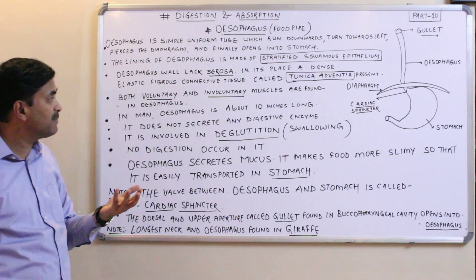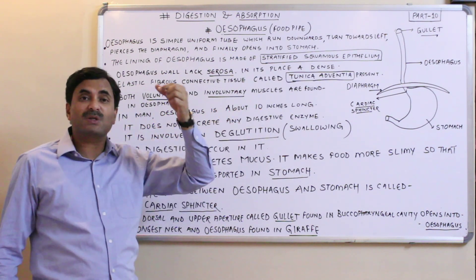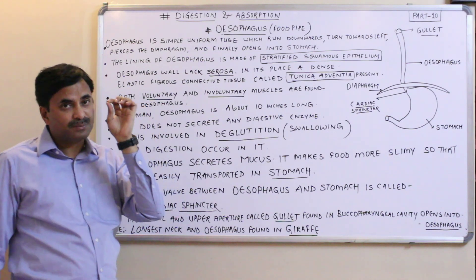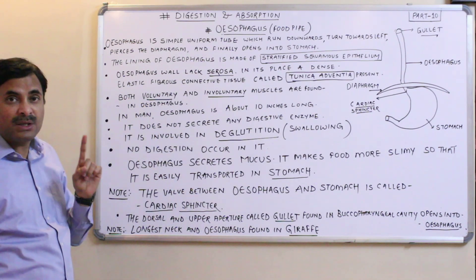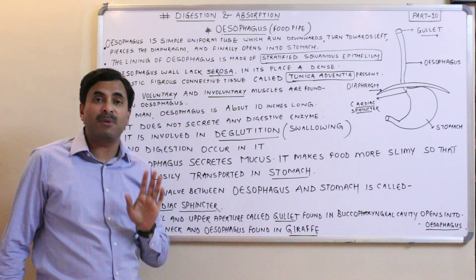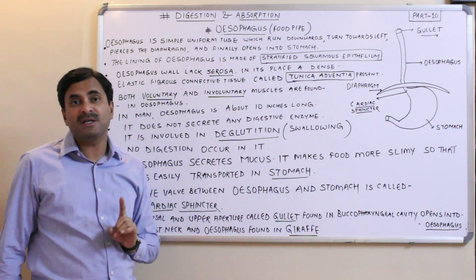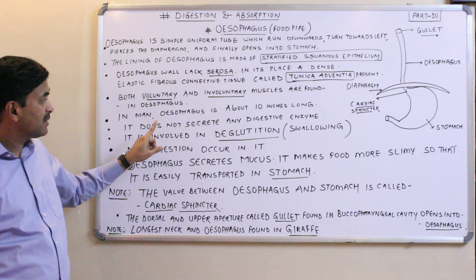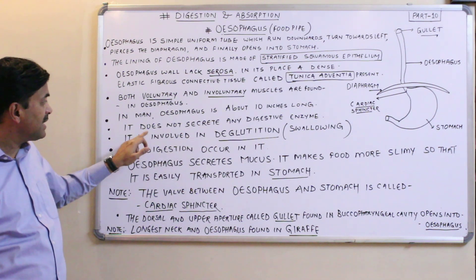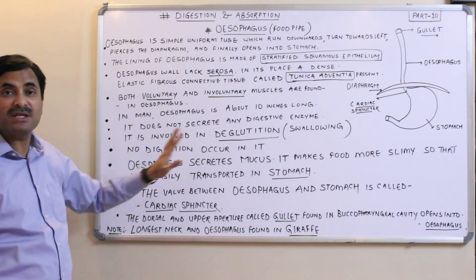In human beings, the esophagus is approximately 10 inches long — it is a uniform long tube. Importantly, it does not secrete any digestive enzymes. Unlike the buccal cavity, stomach, or small intestine where digestion occurs, no digestion takes place in the esophagus.